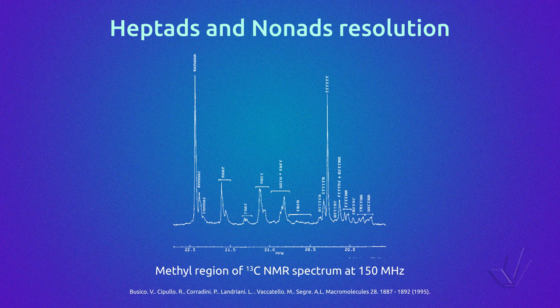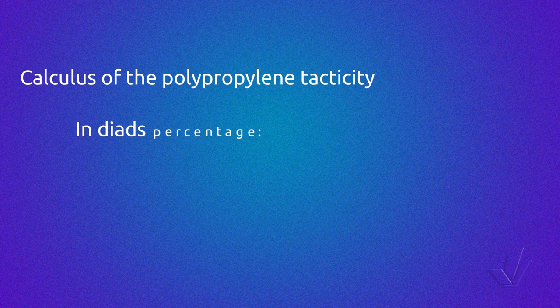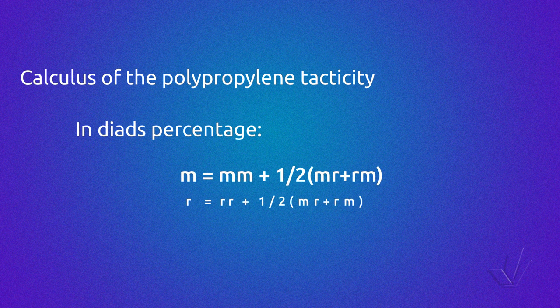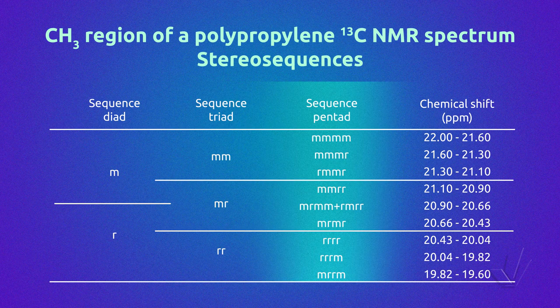The calculation of tacticity is easily done through the area or integrals of the peaks. In this case, quantitativity is assured because the carbon used is always the same — the methyl. Tacticity can be given in percentage of triads or pentads, but also in diads using the relating equation. In this table, it can be seen in more detail the chemical shifts of each region at diad, triad, and pentad resolution.